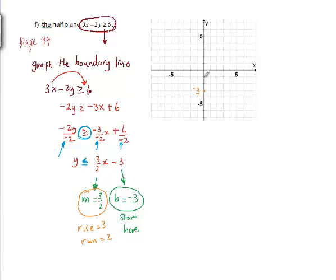Our rise is 3 and our run is 2, and it's positive, so we go up to the right. Rise 1, 2, 3, run 1, 2. There's our other point. Now we sketch our boundary line, but before you sketch it, determine if it's a broken or dotted line or if it's a solid line.